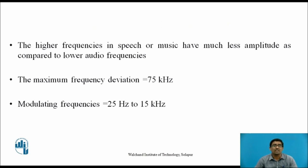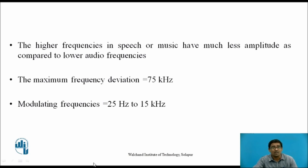The higher frequencies in speech or music have much less amplitude compared to the lower audio frequencies. The maximum frequency deviation is equal to 75 kHz, and the modulating frequency ranges between 25 Hz to 15 kHz. For the frequency modulation bandwidth we require two things: the maximum frequency deviation and the modulating frequency. Knowing these two, we can easily calculate the bandwidth.